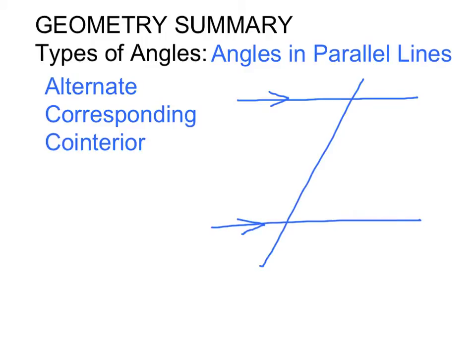There are three types of angles that we look at in parallel lines. Alternate angles are angles that form a Z shape. Alternate angles are equal.